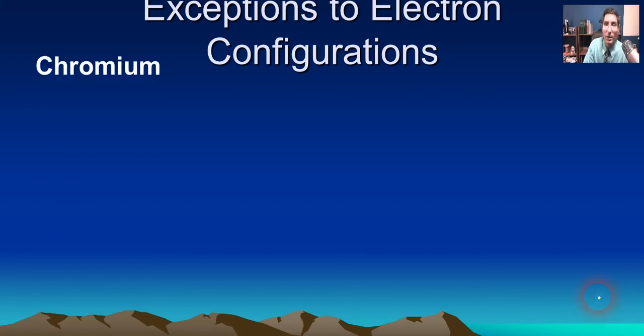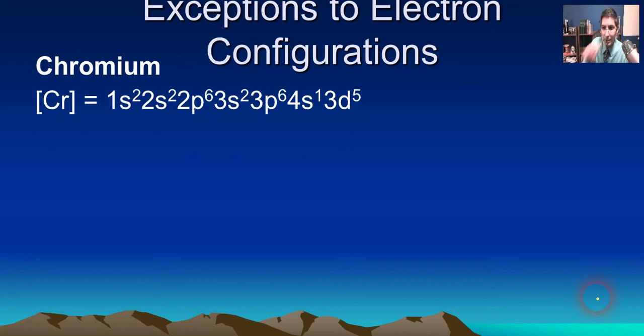Let's take a look at some of the exceptions to the Aufbau principle. You need to know these. The first one is chromium. If you look at the periodic table, you would expect chromium to end with 4s2 3d4. But actually, that's not what happens. It's actually 4s1 3d5.